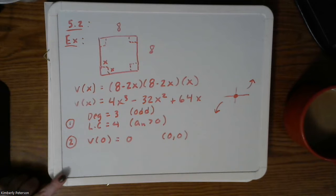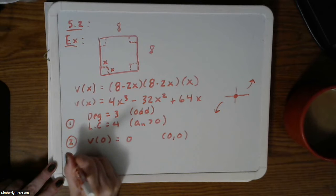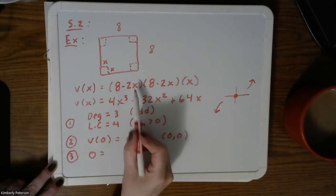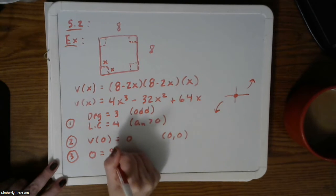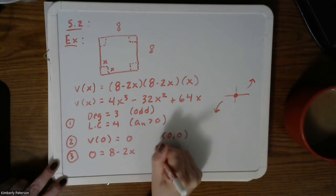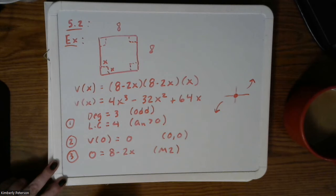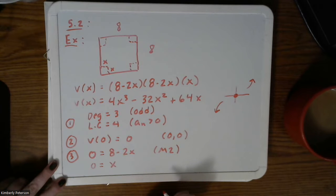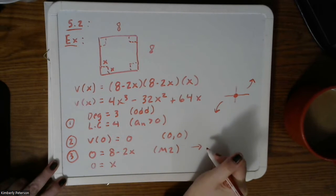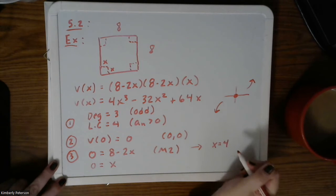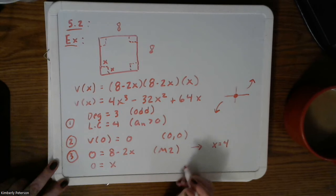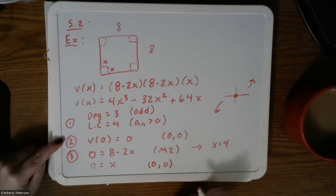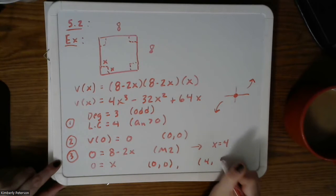Then for step three, to find the other intercepts, we set the function equal to zero. Taking it back to factored form: 0 equals (8 minus 2x) squared times x. The factor (8 minus 2x) appears with multiplicity two, giving x equals 4. So the intercepts are (0, 0) and (4, 0).